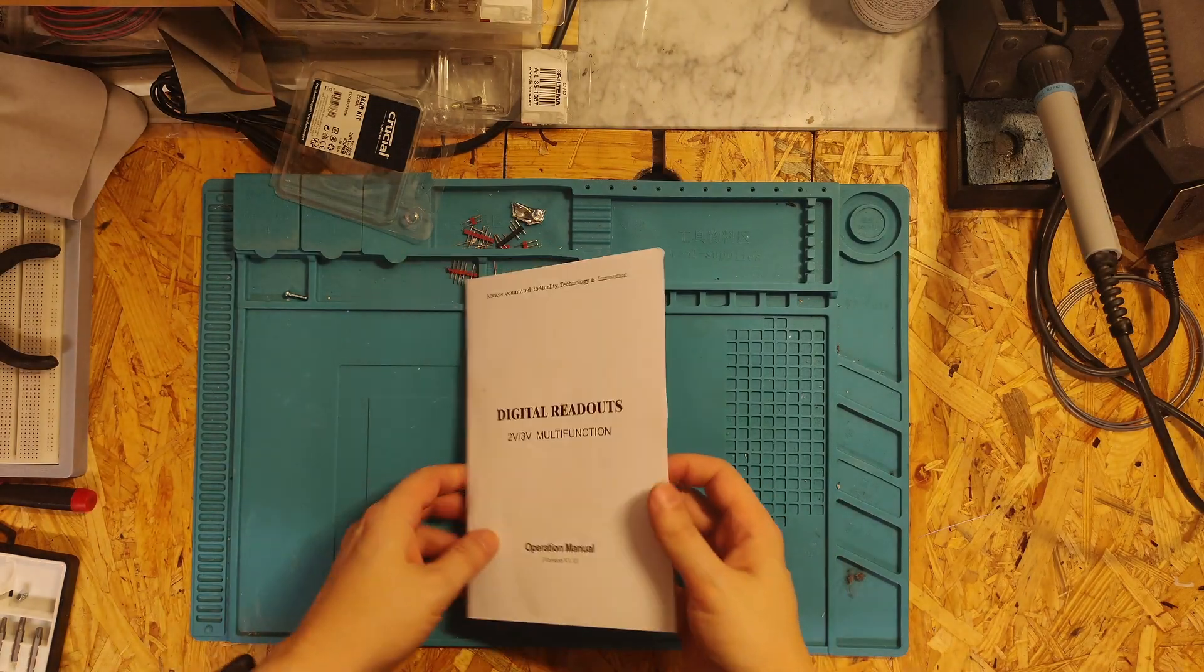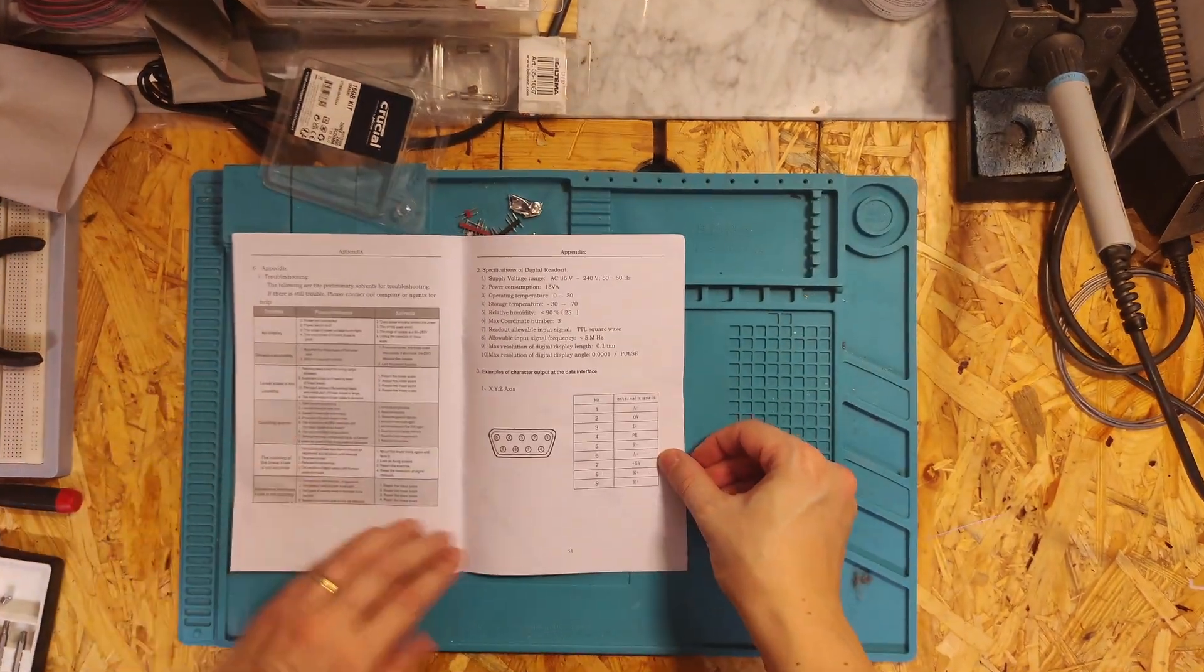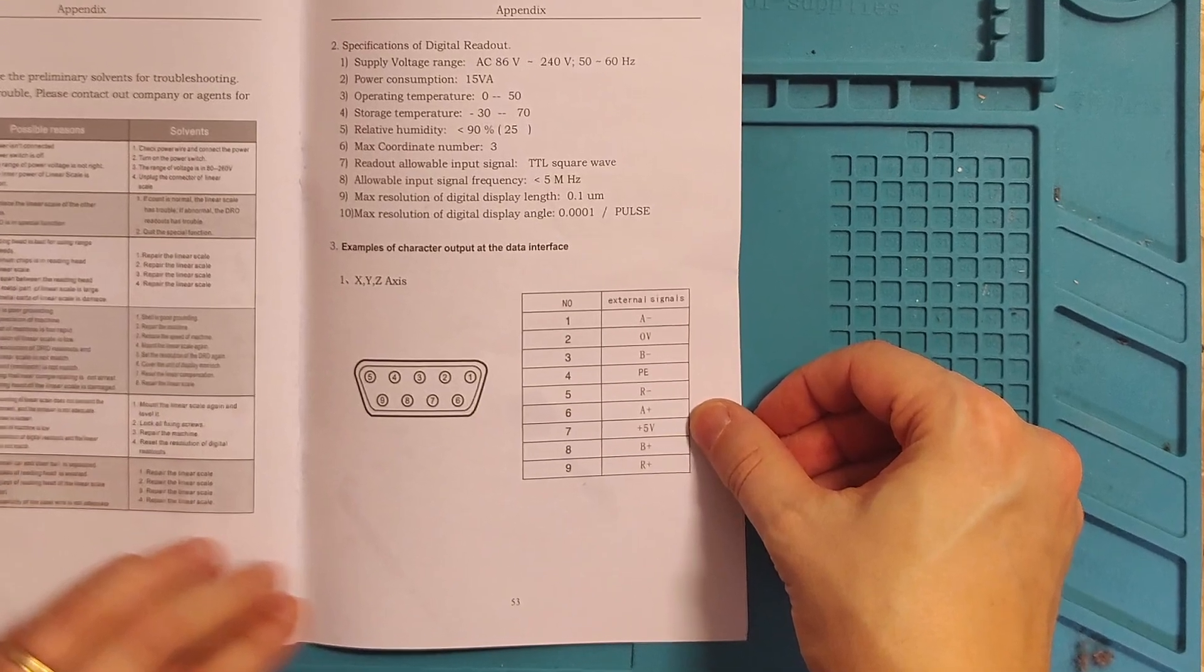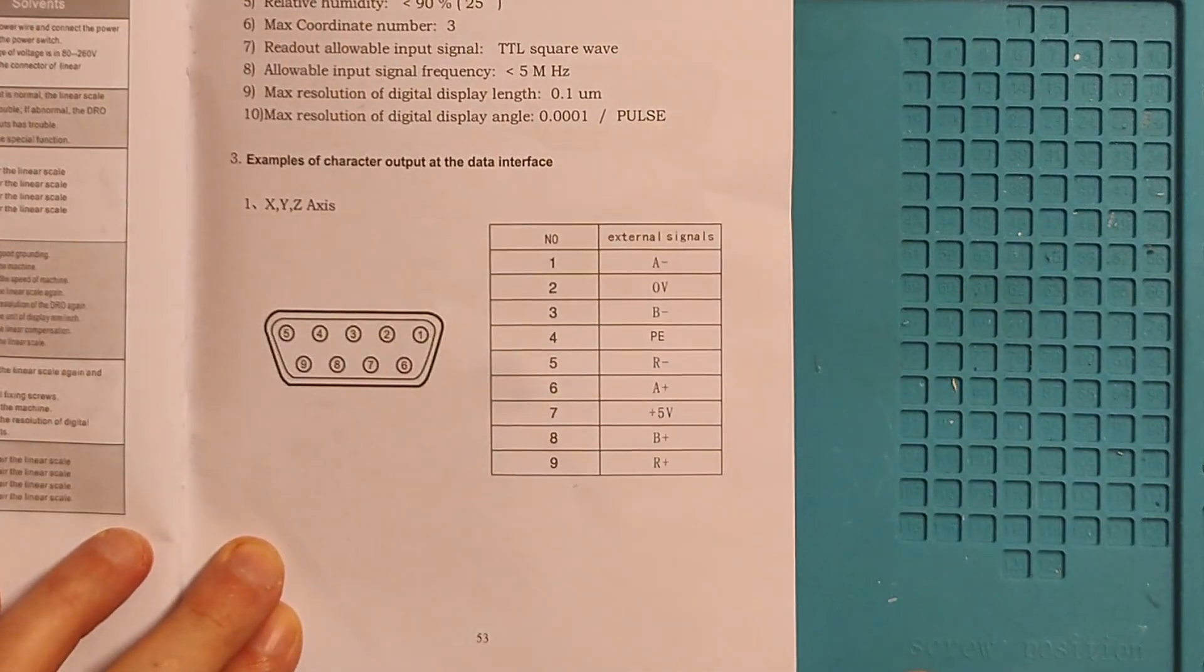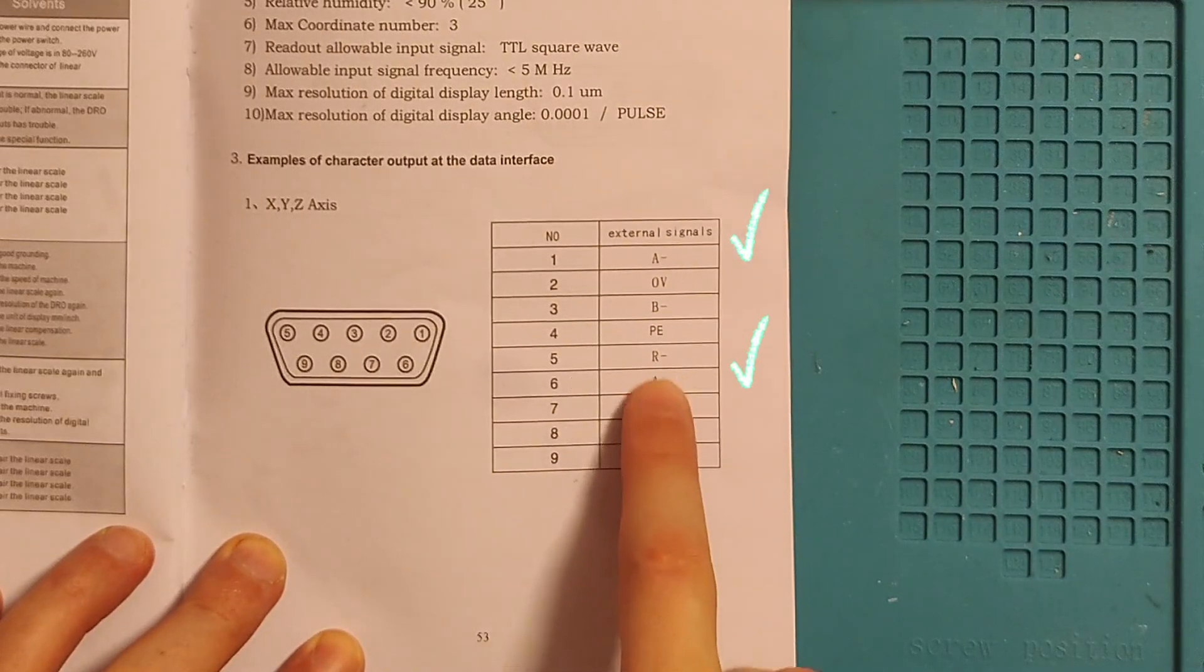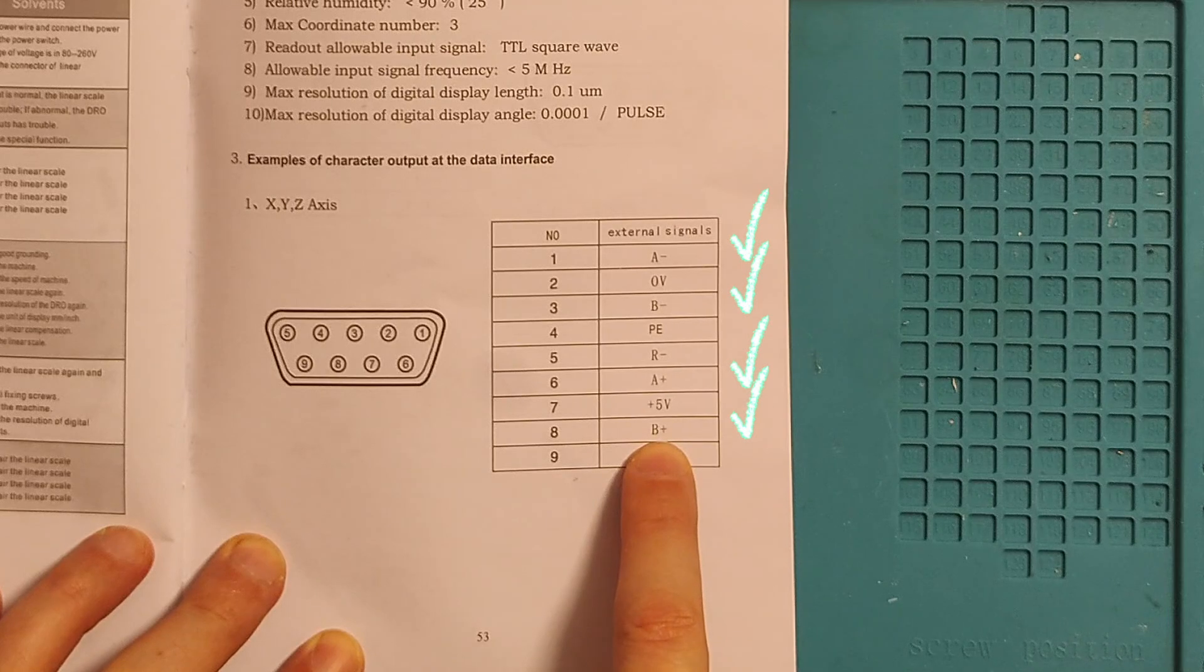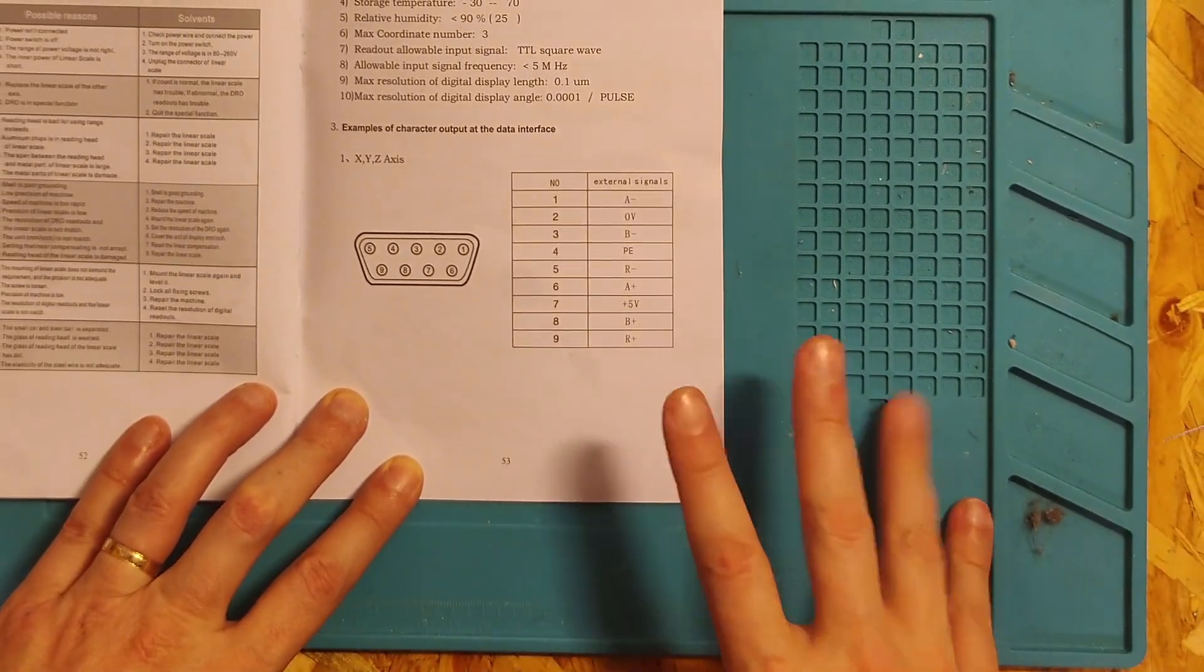Since all three linear scales behave the same, I was pretty sure that they weren't faulty. Thankfully, the manual to the DRO display had the expected pinout information written down. And according to it, the display expects differential signals, which seems like an obvious cause for problems as my cheap linear scales probably don't have such signals.